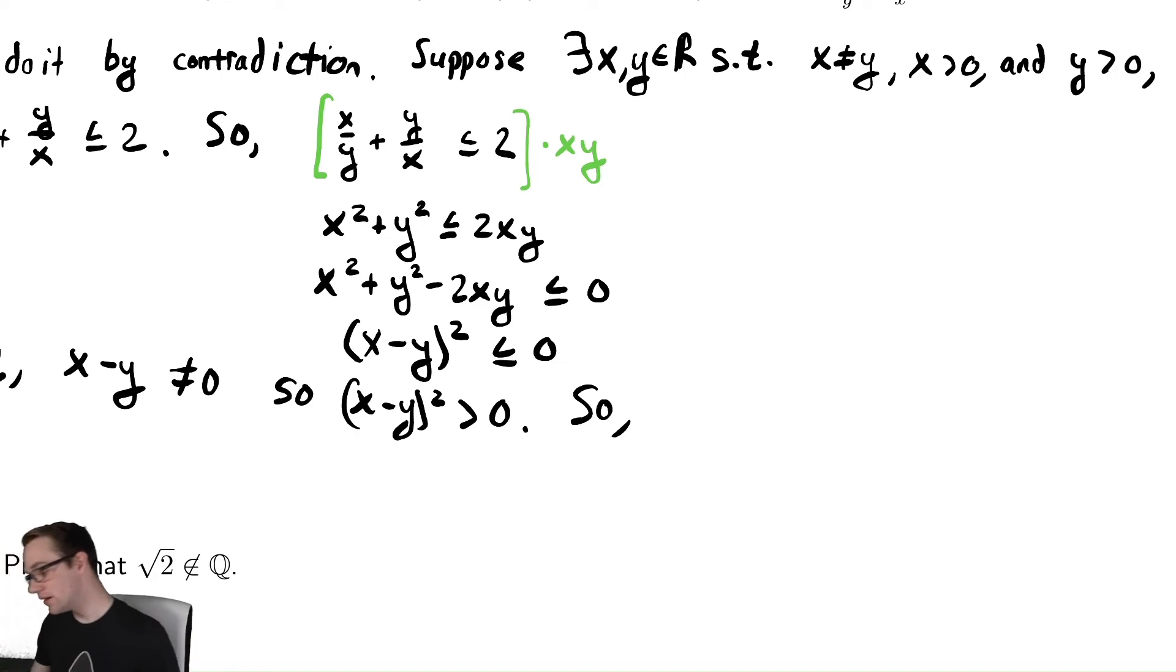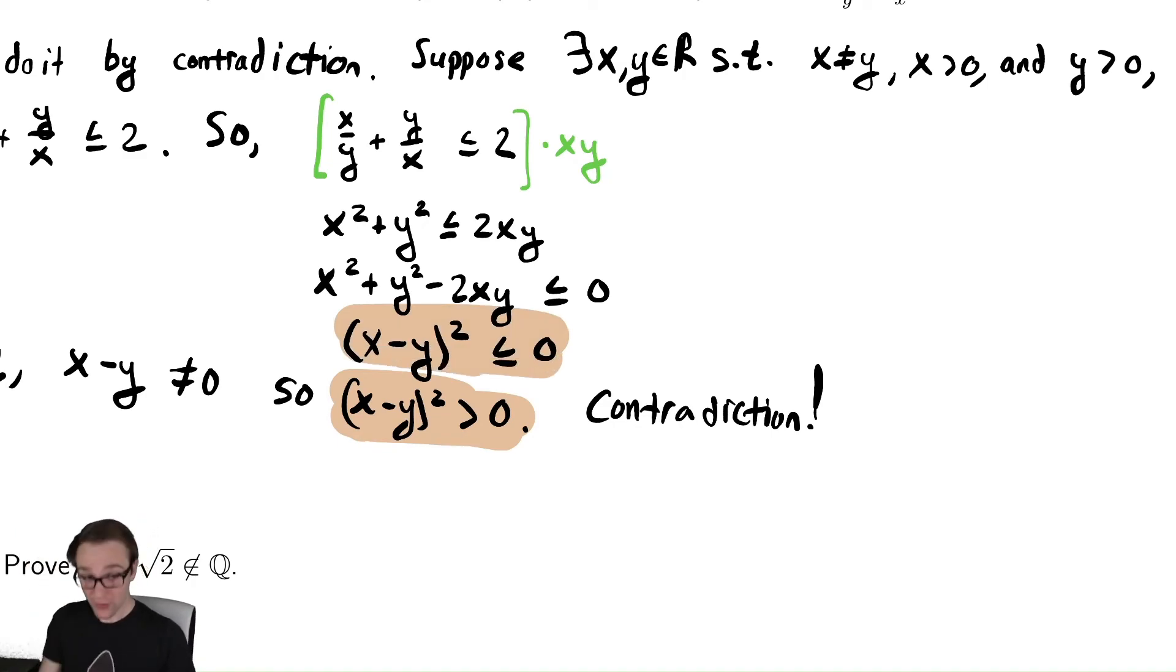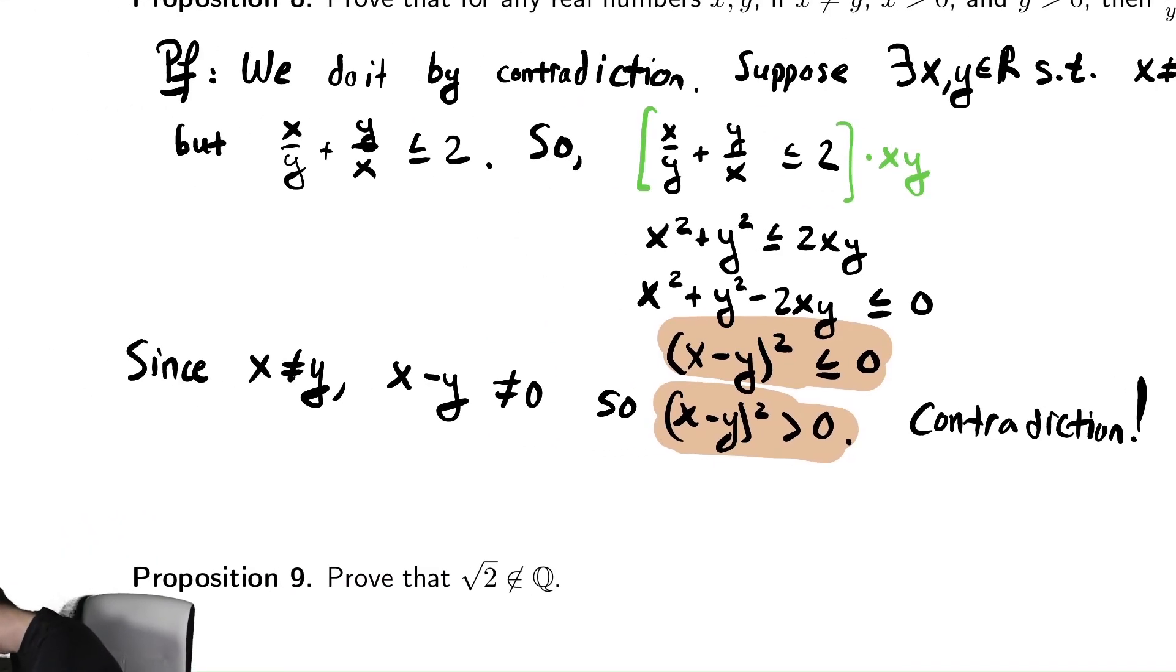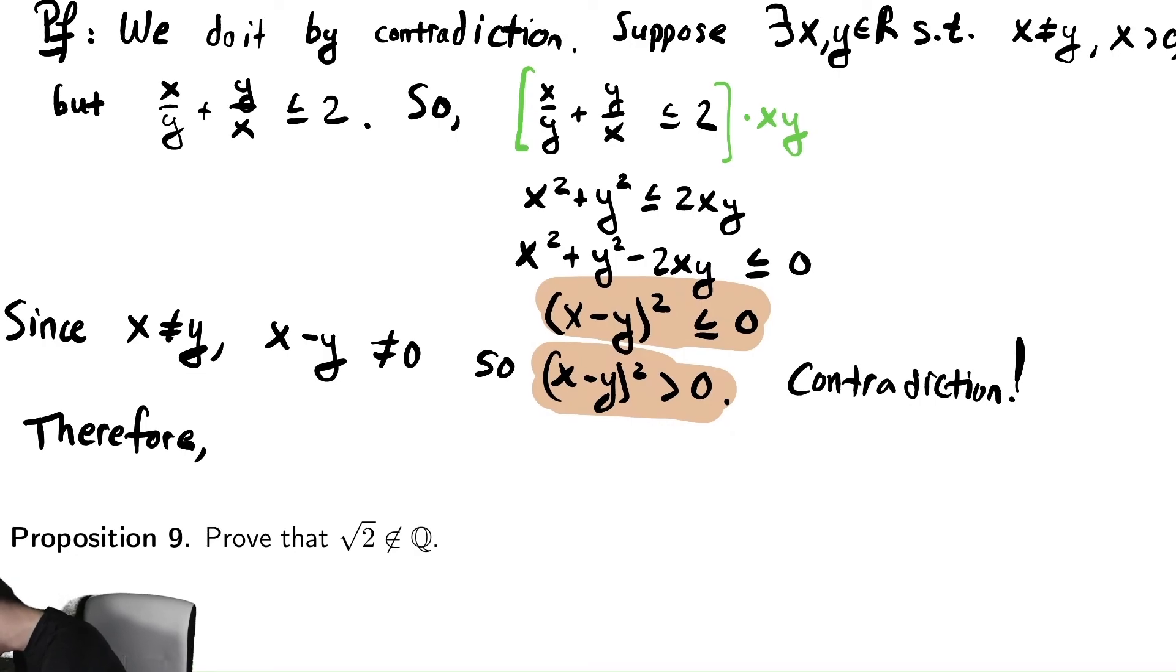So, we know that this is a contradiction. I'm going to write contradiction to indicate that there's something wonky going on here with the fact that it was greater than zero and less than or equal to zero. Therefore, the original statement must be true. Therefore, we know that the original quantity there, x divided by y plus y divided by x, must be greater than two.